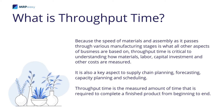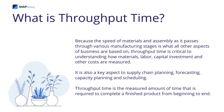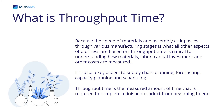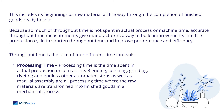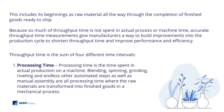It's also a key aspect to supply chain planning, forecasting, capacity planning, and scheduling. Throughput time is the measured amount of time required to complete a finished product from beginning to end, including its beginnings as raw material all the way through the completion of finished goods ready to ship. Because so much of throughput time is not spent in actual process or machine time, accurate throughput time measurements give manufacturers a way to build improvements into the production cycle to shorten throughput time and improve performance and efficiency.